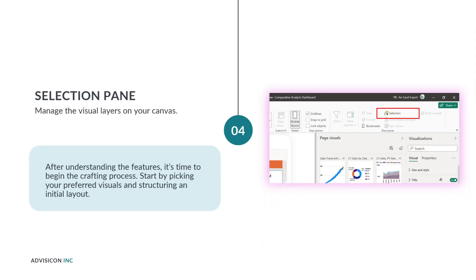The selection pane helps you manage the layers of visuals on your canvas so you can easily adjust their positioning and visibility. With these features, you can start crafting your mobile layout — pick your preferred visuals, structure them on the canvas, and tailor the design to enhance the mobile viewing experience.